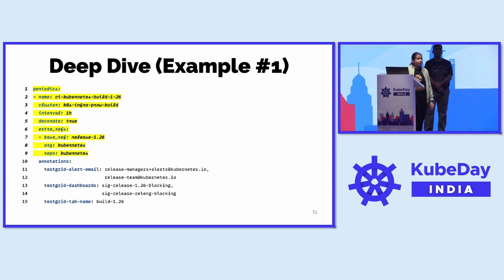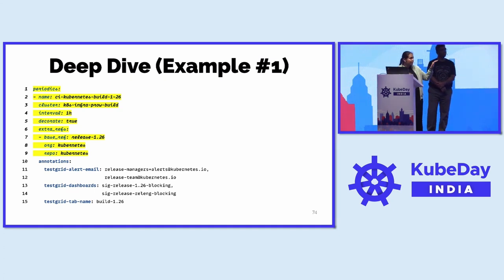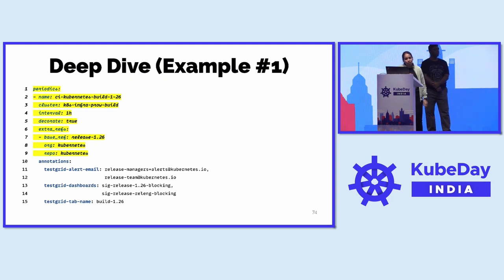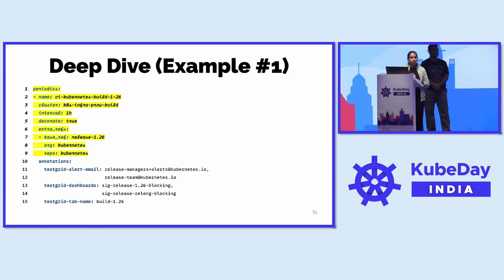In line numbers two and four I'm giving the name to this particular job — I'm calling it CI-kubernetes-build-126. In line number four I'm saying please run this job at every one-hour interval. Line number three specifies 'cluster: k8s-infra-prow-build', telling Prow — which follows the Kubernetes model of control plane and worker plane — which build cluster to use for this particular job.